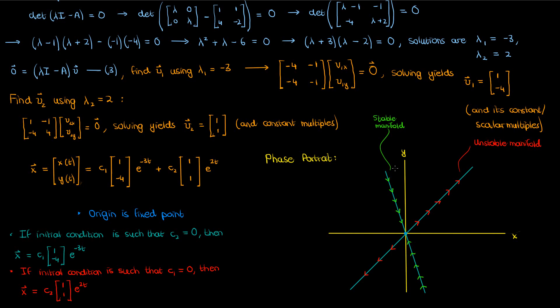That covers the fixed point and manifolds. For the regions between the manifolds, trajectories approach the origin in the direction of the stable manifold and then run away from the origin in the direction of the unstable manifold. Repeating this for each area of the phase portrait gives us the complete phase portrait of this dynamical system.